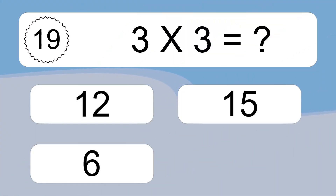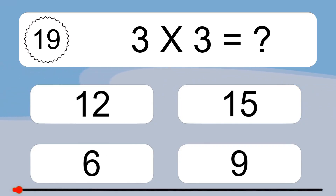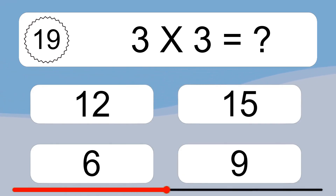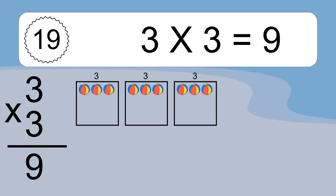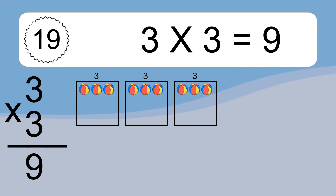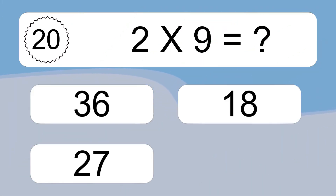3 times 3 equals what? 3 times 3 equals 9. We have 3 boxes, and each box has 3 colorful balls inside. If you count all the balls in all the boxes together, you will have 3 times 3 balls. This equals 9 balls.